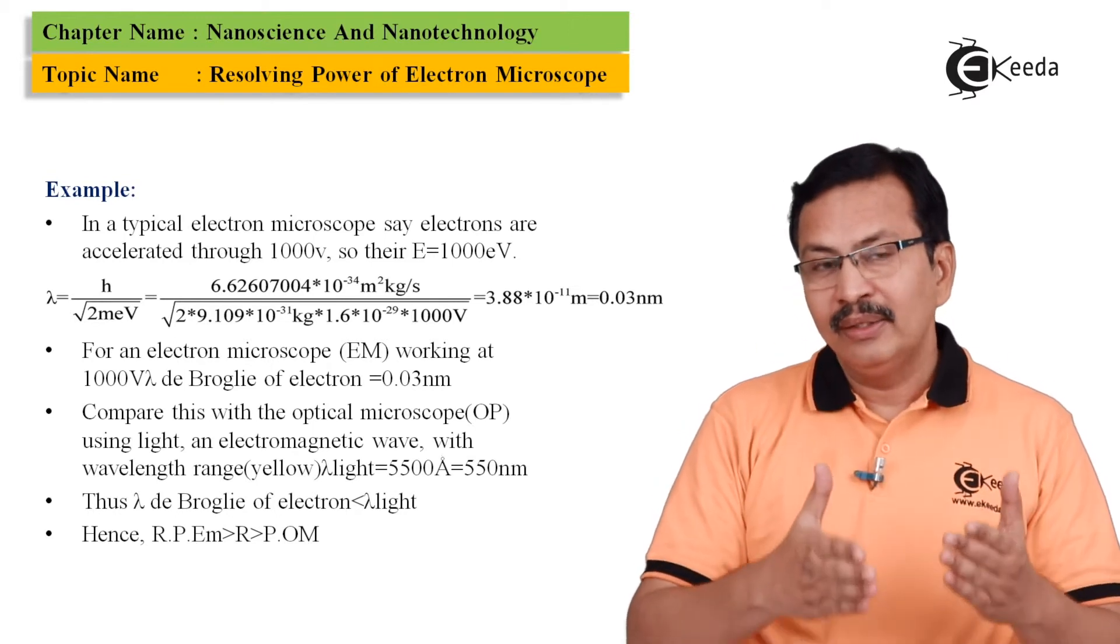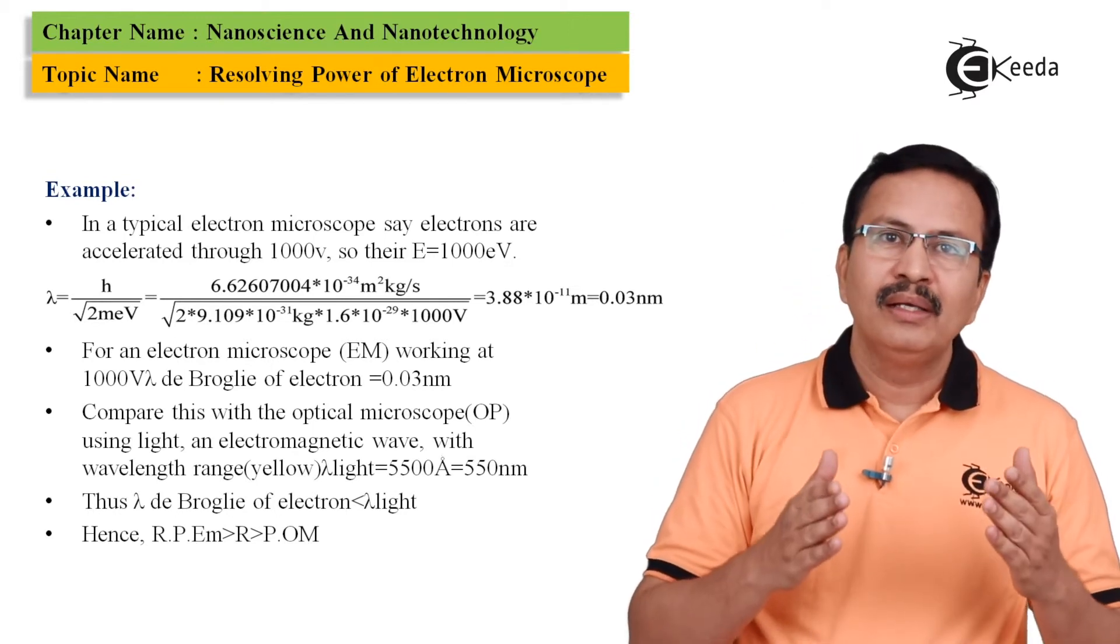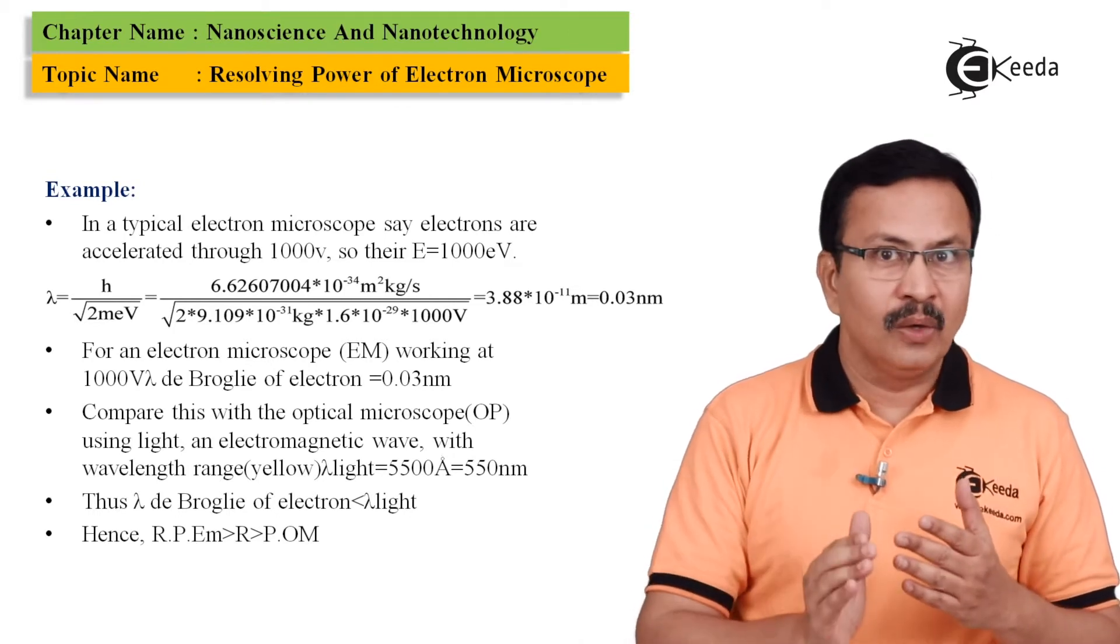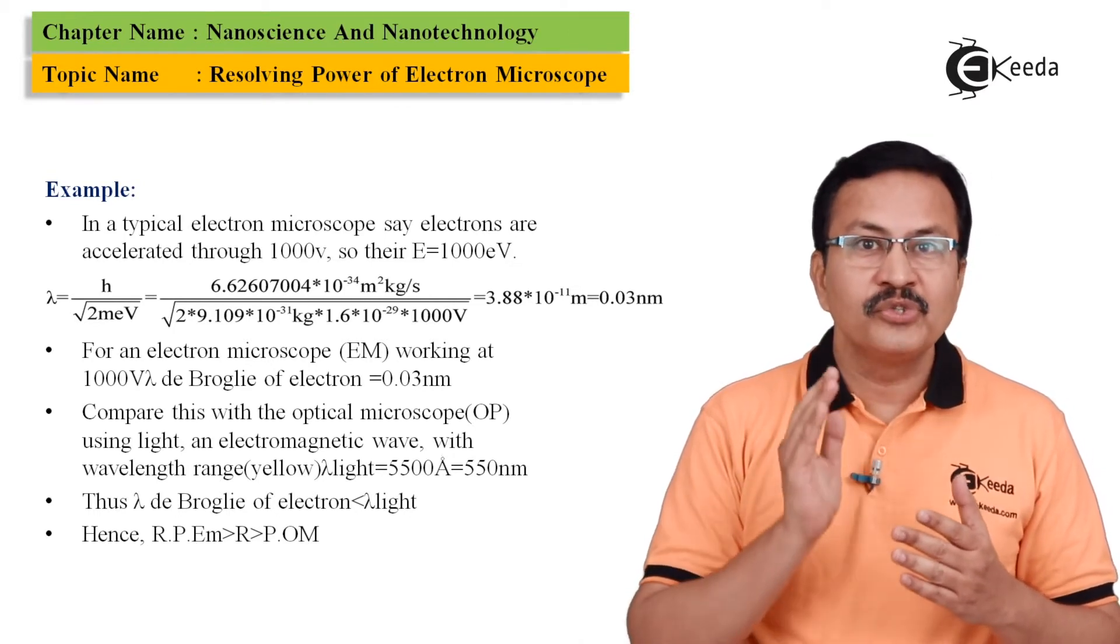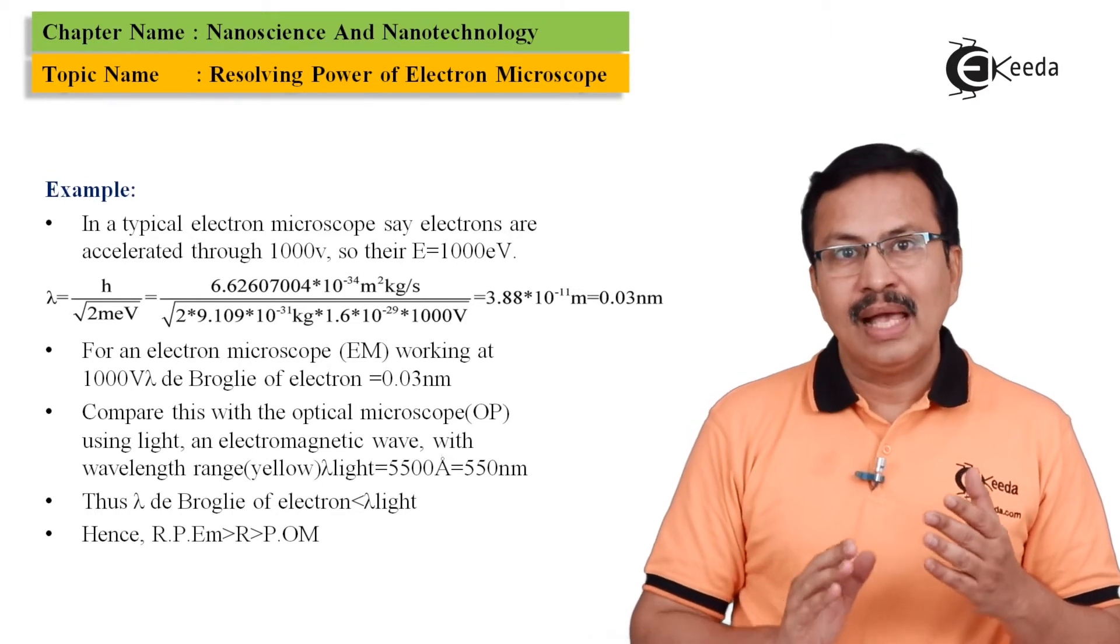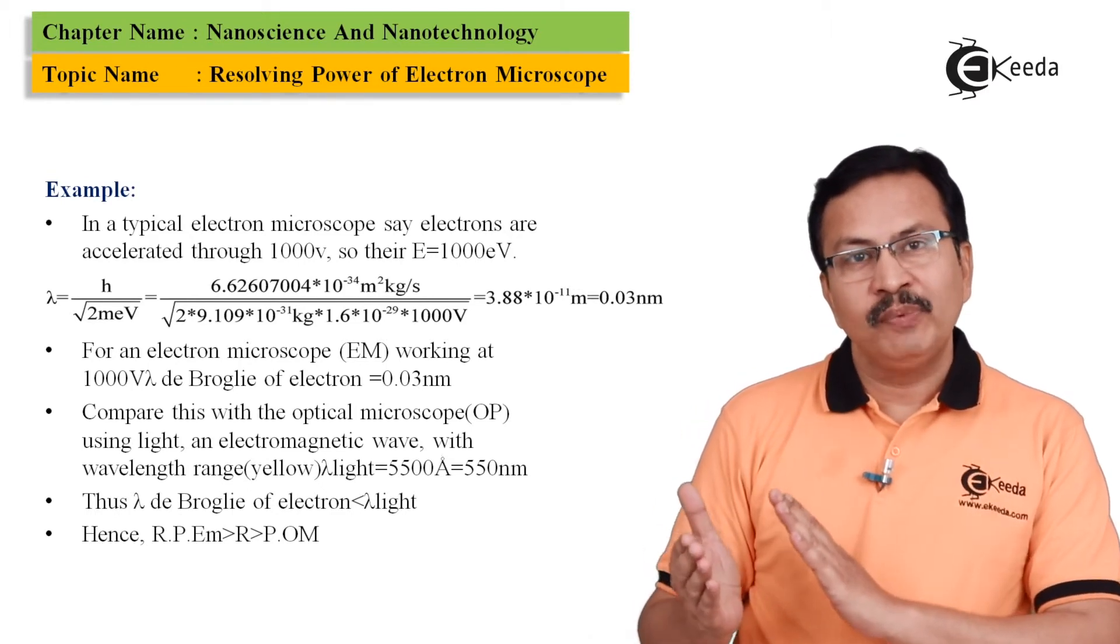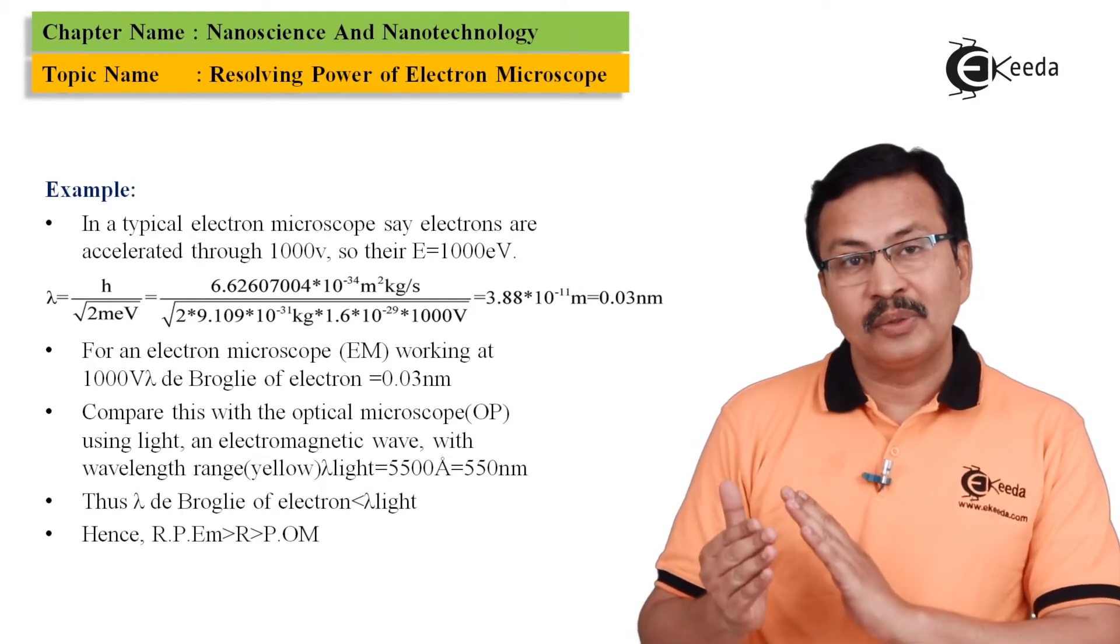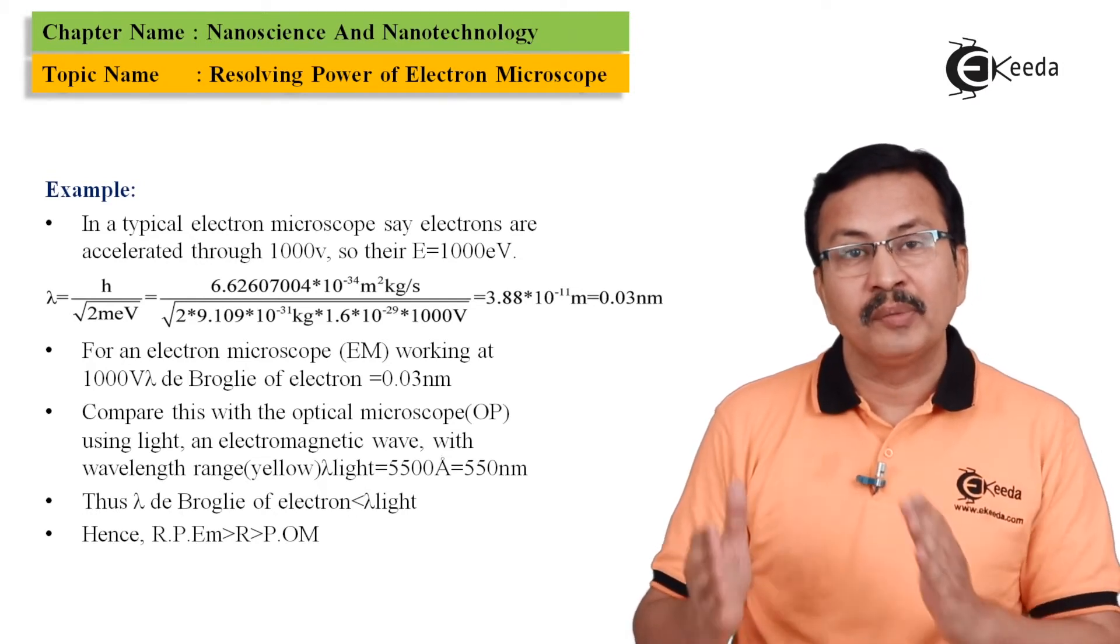At one end, you have the λ of de Broglie that turns out to be around 0.03 nanometers, and at one end for the optical microscope, we have the λ that turns out to be around 550 nanometers.